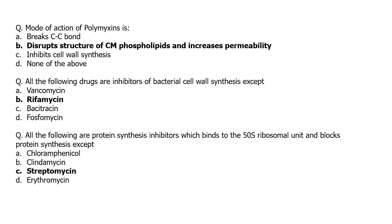All of the following drugs are inhibitors of bacterial cell wall synthesis except — if you know which antibiotics inhibit cell wall synthesis, you can find the odd one out. Rifamycin deals with RNA polymerase, so it is the odd one out. Similarly: all of the following are protein synthesis inhibitors binding the 50S ribosomal unit except — chloramphenicol, clindamycin, and erythromycin all block 50S; the odd one out is streptomycin.